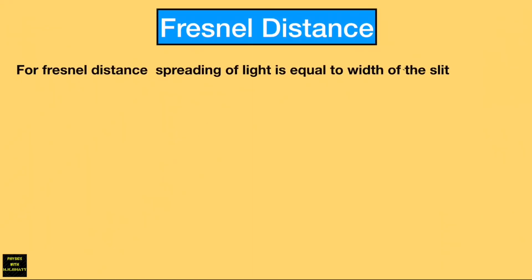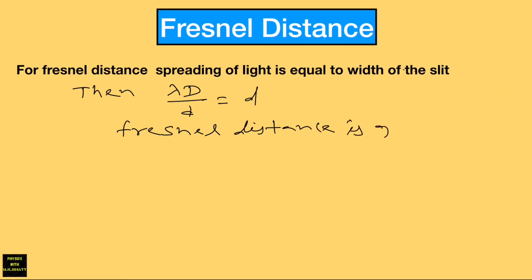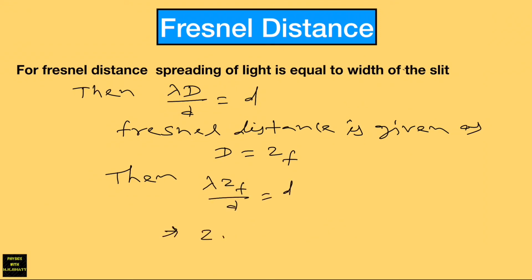Let us find the expression for Fresnel distance. At Fresnel distance, the spreading of light is equal to the width of the slit on the screen. Therefore we can write λD/d = d, where λD/d is the region of spreading of light and d is the width of the slit. Substituting D = Z_f, we get λ × Z_f / d = d. Cross-multiplying gives Z_f = d² / λ. This is the expression for Fresnel distance, and using this formula we can find the particular value of Fresnel distance for given values of λ and d.